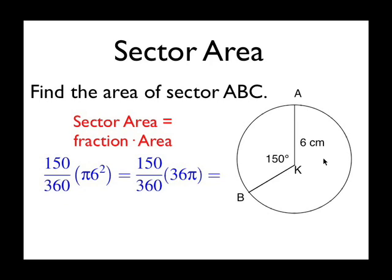The 150 over 360 simplifies to 5 over 12, and simplifying that all out, 12 goes into 36 three times. So 5 times 3 pi would be 15 pi centimeters.